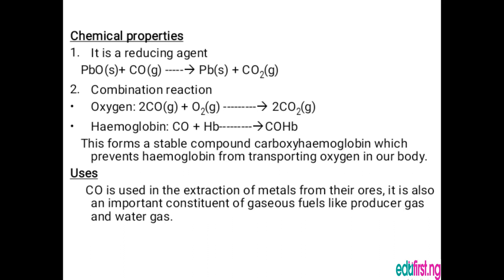The chemical properties of carbon two oxide: it is a reducing agent, meaning it removes oxygen from compounds. For example, lead oxide (PbO) reacts with CO to give lead and carbon four oxide. It undergoes combination reactions, reacting with oxygen to give CO2. It also reacts with hemoglobin to form a stable compound called carboxyhemoglobin, which prevents hemoglobin from transporting oxygen in the body, and can cause death.